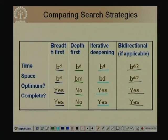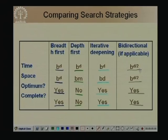However, in some cases, unless you have a very efficient way of checking against the frontier of the other search tree, there could be more overhead involved in trying to check if a node is present in the search tree.